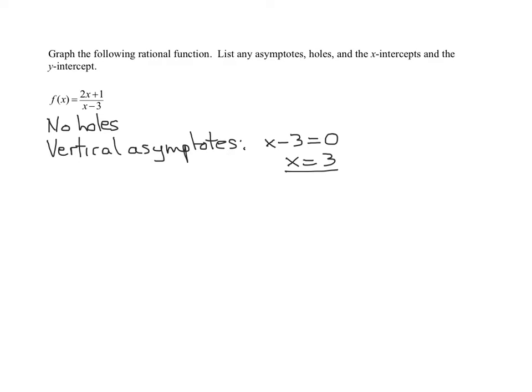Now we need to look to see if there are any horizontal asymptotes. Horizontal asymptotes we find based on the degree of the numerator and the denominator. So let's look at our numerator here.